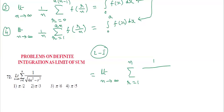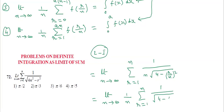So n tends to infinity, r equals 1 to n. Inside the root, take n square common. That will come outside as n into under root 4 minus r square by n square. That is r by n whole square. So finally this is limit n tends to infinity 1 by n sigma r equals 1 to n, 1 by under root 4 minus r by n whole square.